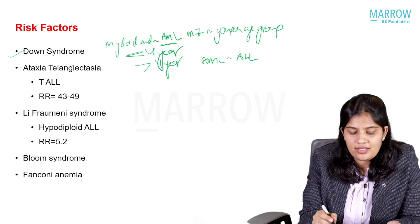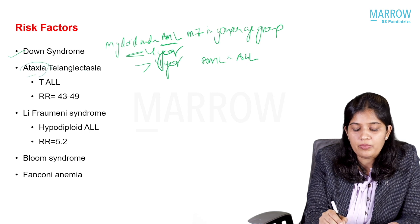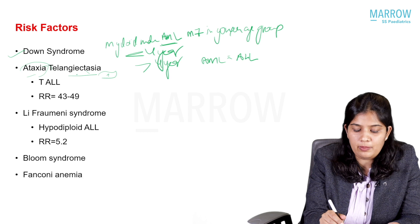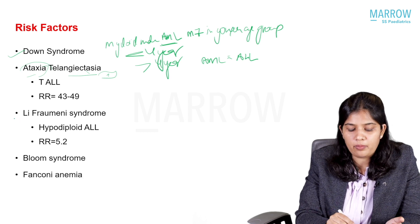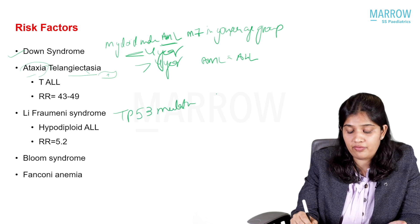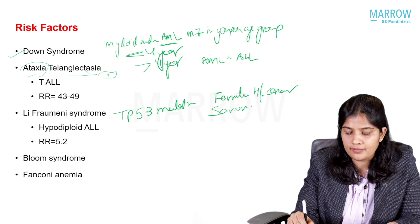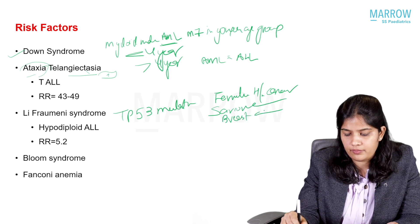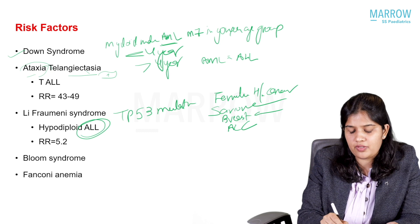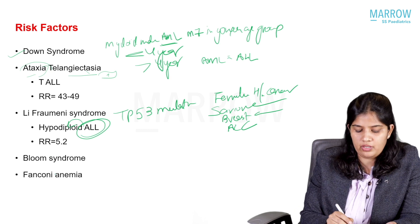Patients with ataxia telangiectasia — presenting with cerebellar ataxia and skin and ocular telangiectasia — are also at high risk of developing T-acute lymphoblastic leukemia. Patients with Li-Fraumeni syndrome, which has a TP53 mutation, have a familial history of cancers including sarcomas, breast cancer, and adrenocortical cancer; these patients are also at high risk of developing ALL, specifically hypodiploid ALL. Patients with Fanconi anemia and Bloom syndrome are also at high risk of developing ALL.